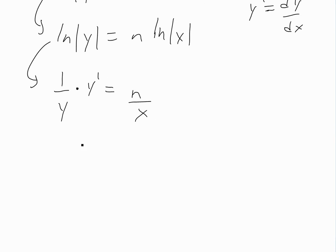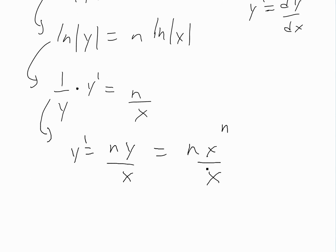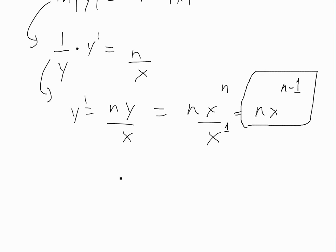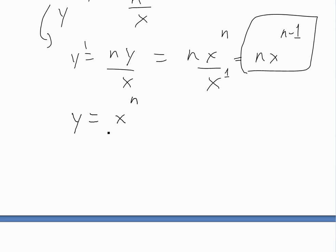Rearranging, we get y prime equals n times y over x. Since y equals x to the n, substituting gives n times x to the n over x. Using exponent properties, x to the n divided by x to the 1 gives x to the n minus 1. So y prime equals n times x to the n minus 1.